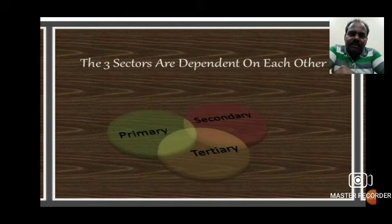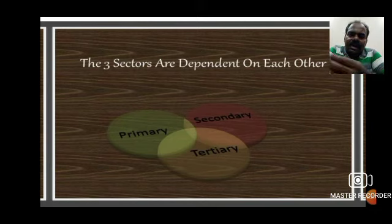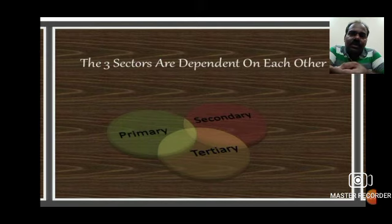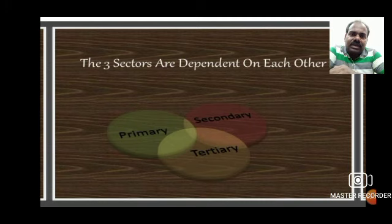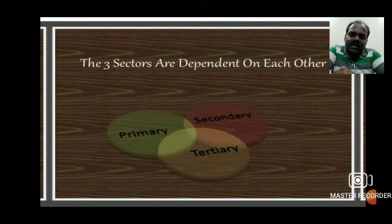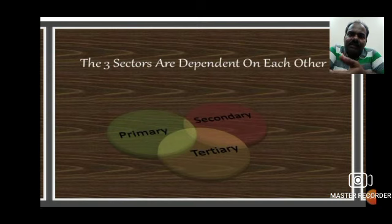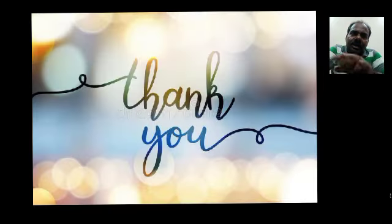The same way, the secondary sector also depends on others. If the primary sector is not there, there is no need for the secondary sector to make tractors and other machinery needed for modern farming methods. Different kinds of tools and machines that farmers use are made in the secondary sector — because of the development in the primary sector. Similarly, the tertiary sector is developing because of the development of the primary and secondary sectors. So all three sectors are dependent on each other.